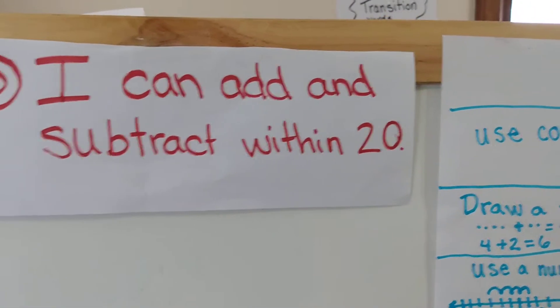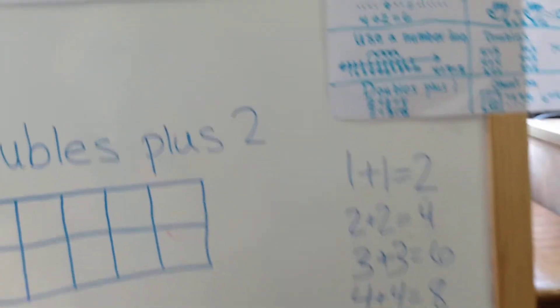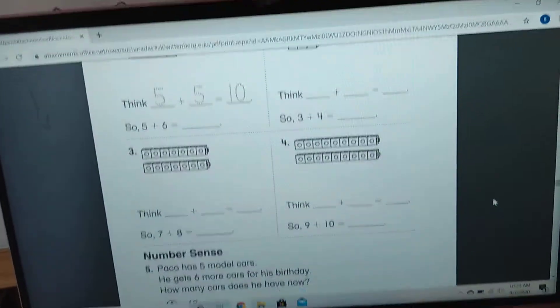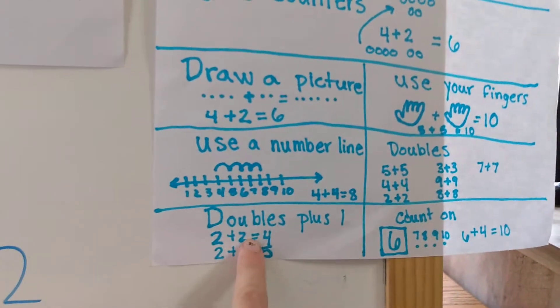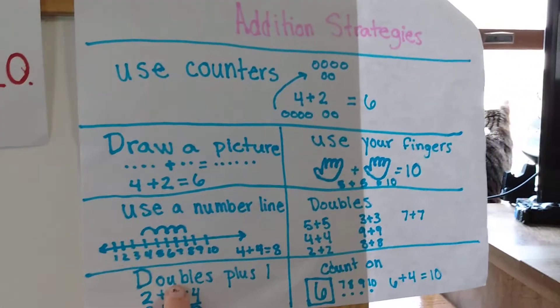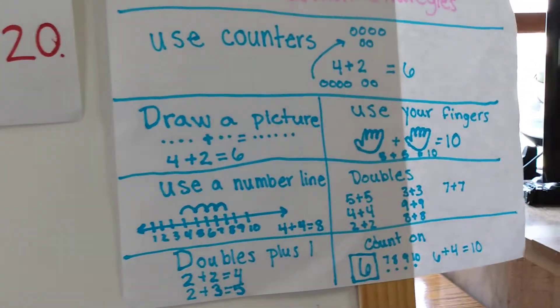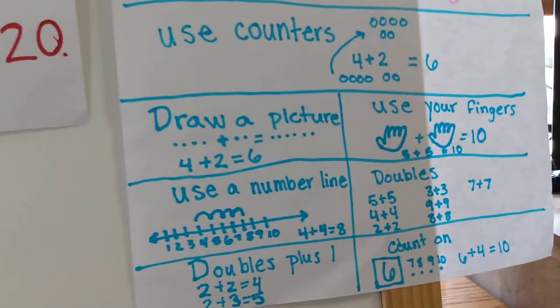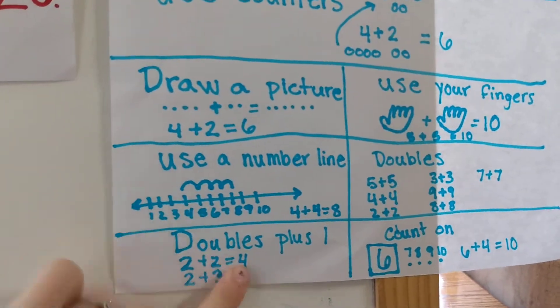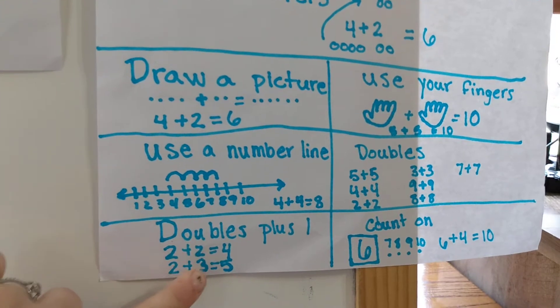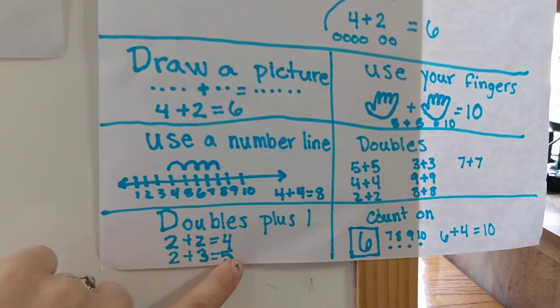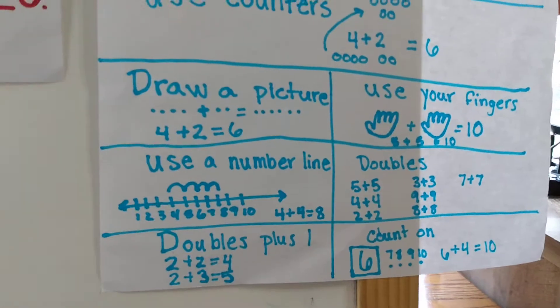Yesterday you guys worked on the doubles plus one worksheet, which is right here. You should have worked on it and sent it to Mrs. B. We added doubles plus one to our addition strategies poster. Remember that doubles plus one — if we know two plus two equals four, then we know two plus three equals five, because all we did was add one, and that added one to our sum, or the answer to the addition problem.